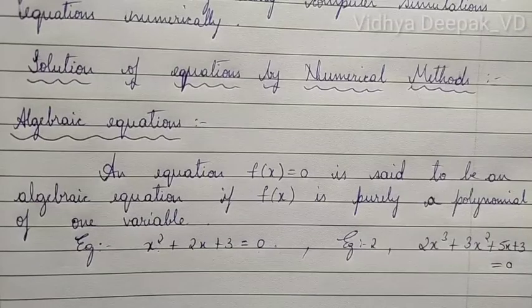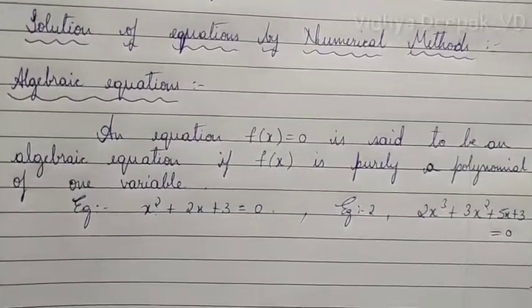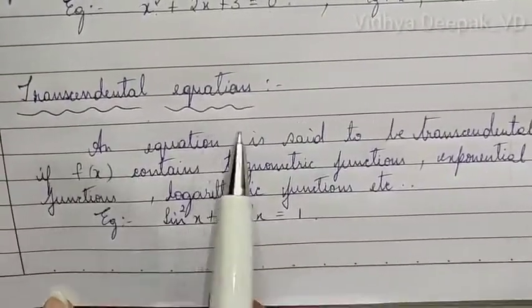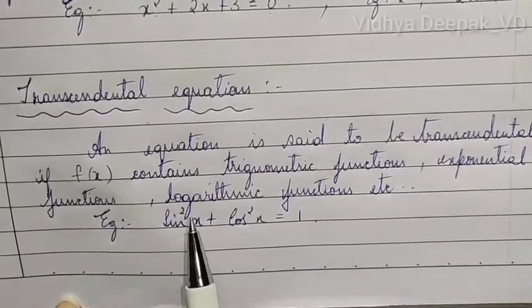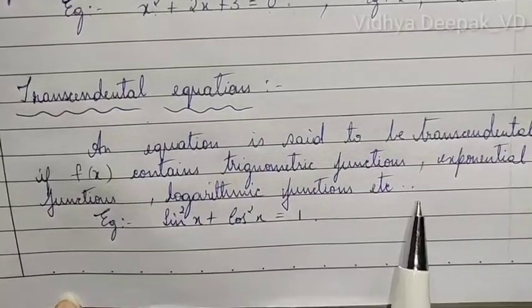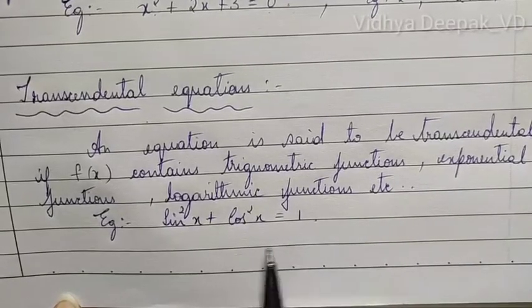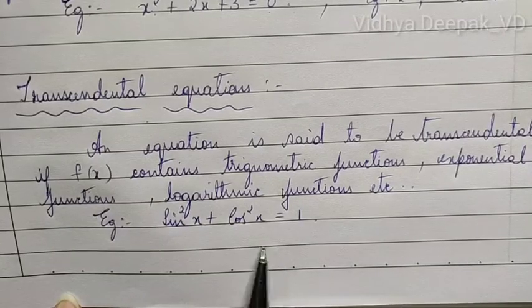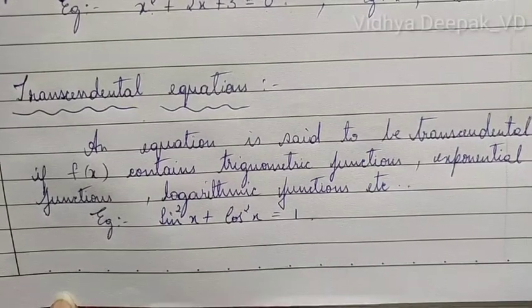Next is transcendental equations. An equation is said to be transcendental if f(x) contains trigonometric functions, exponential functions, logarithmic functions, etc. For example, sin²x + cos²x = 1. This is a transcendental equation.